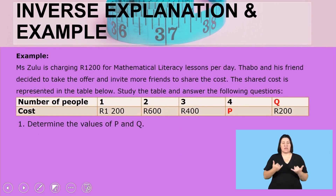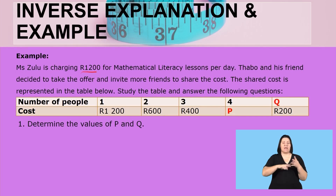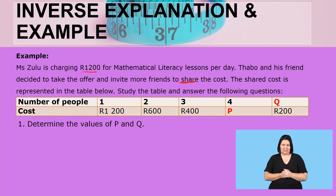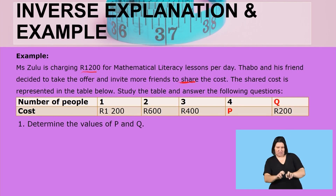Now let us take the first example. Ms. Zulu is charging 1,200 rent for mathematical literacy lessons per day. Turbo and his friends decided to take the offer and invite more friends to share the cost. It's important to note that they are sharing. The shared cost is represented in the table below.